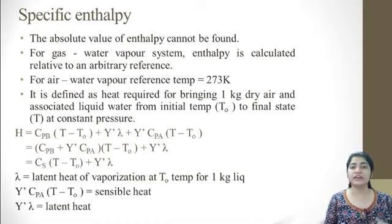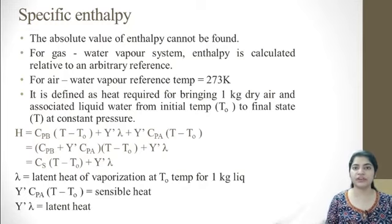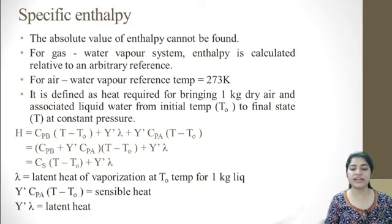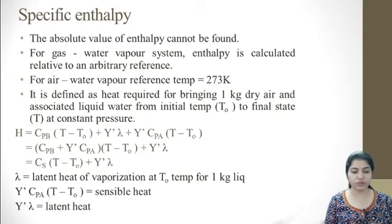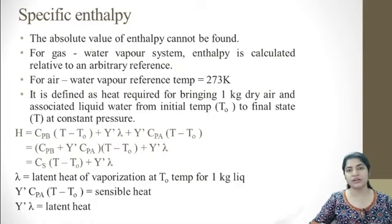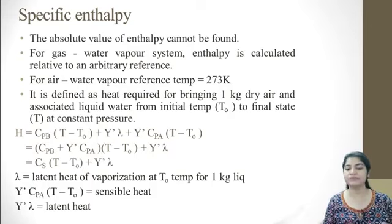Specific heat means with respect to 1 kg, with respect to mass. Similarly, Cpa is the specific heat of your water. Here we are not directly taking into account a combined water and air system, because the specific heat of dry air and water are different. That is why you define it as the heat required to bring 1 kg dry air plus associated water. For dry air, only sensible heat has to be given, so the formula is CpB into (T minus T0), plus Y' lambda, where Y' is the amount of water present in your dry air.